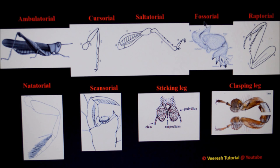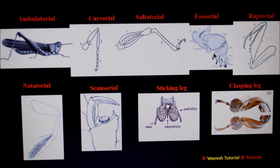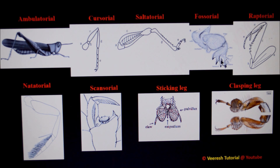In fossorial legs, you can see the forelegs of mole crickets modified into this type. Here, the femur is stout and the tibia is also stout. Distally, the tibia is modified into strong tine-like structures. Apart from the tibia, the tarsus is also modified into tines. The basitarsus works against the tibial tines to cut root legs during digging.